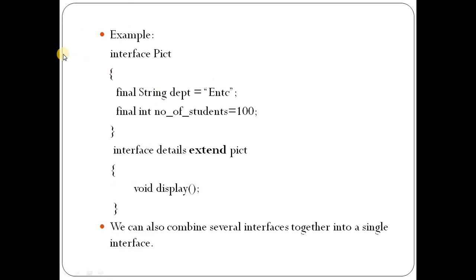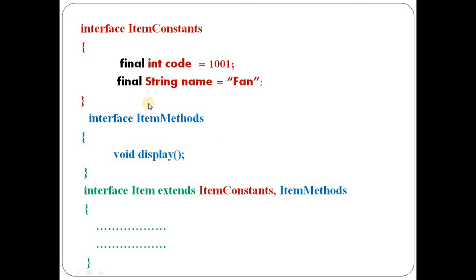In another example with multiple super interfaces: interface atom_constants has two data fields — code of type integer and name of type string with initial values. Interface atom_methods is independently defined. When defining interface atom as a sub interface, it extends both atom_constants and atom_methods using the extends keyword, with the two super interfaces separated by a comma.